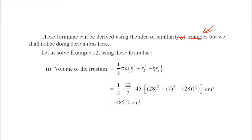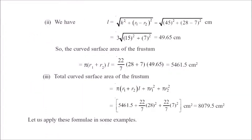We have seen in the example how we derived using similarity of triangles. Now let us solve the example using the direct formula: Volume = (1/3)π h (r1² + r2² + r1 r2), where r1 = 28, r2 = 7, and the height is known. For slant height: l = √(h² + (r1 − r2)²). Then we can find the curved surface area π(r1 + r2) l, and the total surface area π(r1 + r2) l + π r1² + π r2² = 8079.